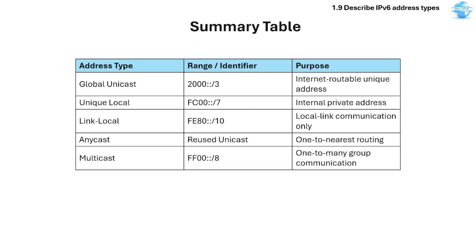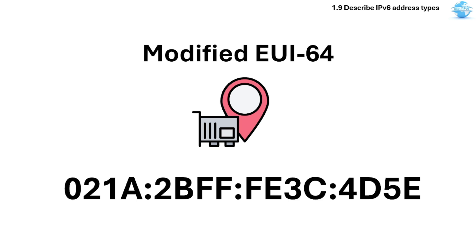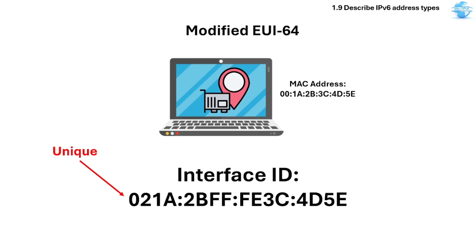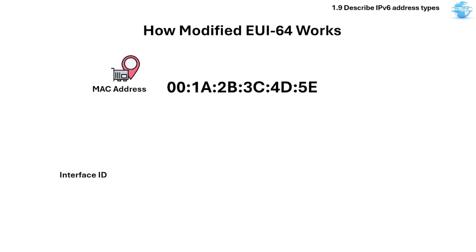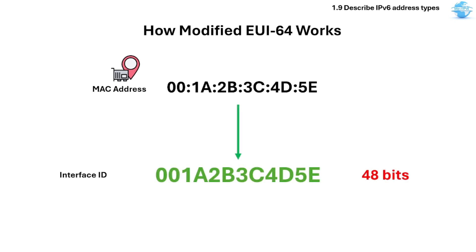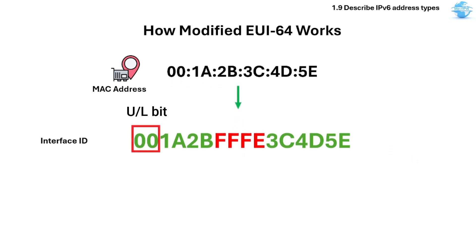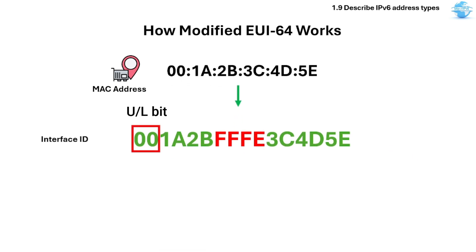Here's the summary table for the address types, ranges, and their purposes. Let's now talk about modified EUI-64. This is a way to automatically generate the host part of an IPv6 address from a device's MAC address. It ensures the interface ID — the last 64 bits — is unique. To do this, take the 48-bit MAC address and insert FFFE in the middle to make it 64 bits. Then flip the 7th bit, which is called the universal or local bit.